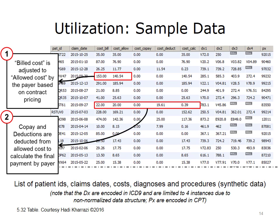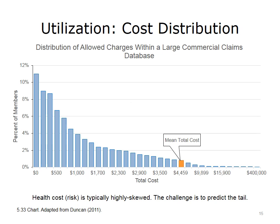Population health analytic models may predict any of these costs depending on their analytical goals. This bar chart shows the distribution of cost across the entire population of a large commercial claims database. As shown on the left side of the chart, a large majority of the population incurs less than the mean total cost, which is set at $4,459 for this particular health plan. However, a long tail of high utilizers exists on the right side of the chart. The main challenge in population health analytics is to predict this highly skewed long tail of utilizers.